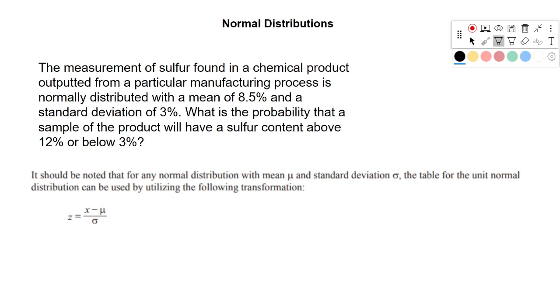So we can go to our reference manual, this is pulled directly from the reference manual, and it tells us, it's in the normal distribution section, it tells us how to handle these types of problems. So we see we need to find a transform value z, and z is an x value minus our mu value over sigma.